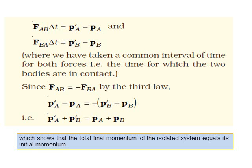Here, the left side denotes the final momentum of the system and the right side denotes the initial momentum. That means the final momentum of the isolated system equals its initial momentum.